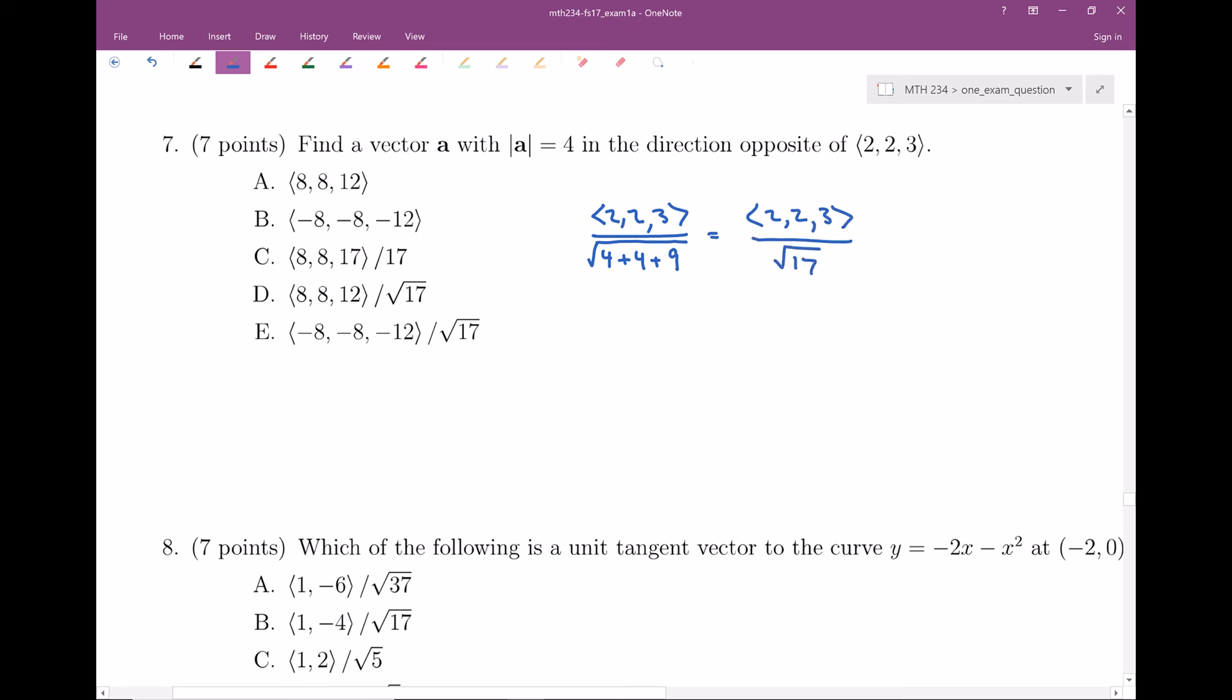This is a unit vector, so it has length 1. Now, if you wanted this to have length 4, if I wanted the magnitude to be 4, then I take this vector that's now length 1.